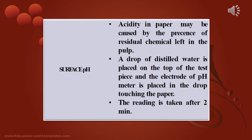For the surface pH test, acidity in paper may be caused by the presence of residual chemicals left in the pulp. A drop of distilled water is placed on the test piece, and the electrode of a pH meter is placed in the drop touching the paper. The reading is taken after 2 minutes.